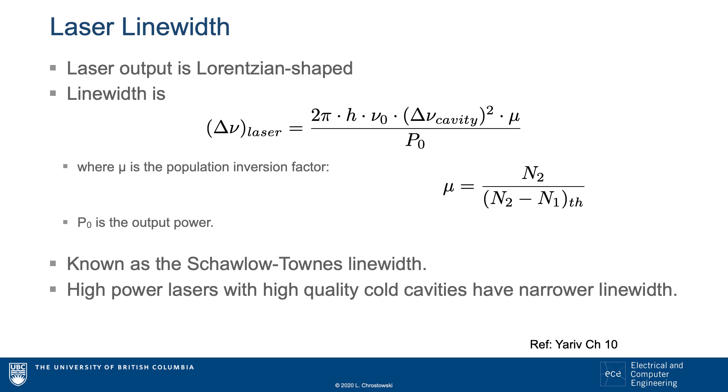Finally, there is a population inversion factor, which is the fraction of electrons in the excited state versus the difference of the population. This inversion factor is defined for two-level systems here.